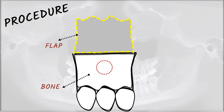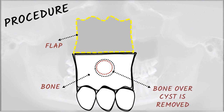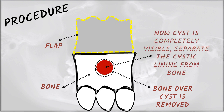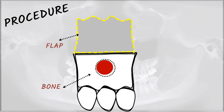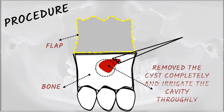The bone over the cyst is removed with the help of a drill or chisel. As you can see, bone over the cyst is removed and now the cyst is completely visible. Separate the cystic lining from the bone — in enucleation we have to remove the complete cyst along with the cystic lining. Remember this point, it is very important.